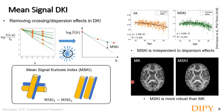Another advantage of the mean signal kurtosis index is that it is more robust to noise artifacts. For example, it is typical to observe implausible negative values in regions of the corpus callosum — those black voxels — which reflect the effects of noise. Using mean signal kurtosis, since it involves estimating fewer parameters, it produces maps that are much cleaner from this type of artifact.